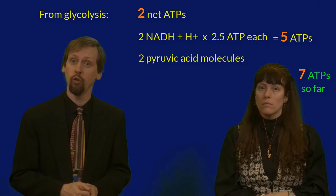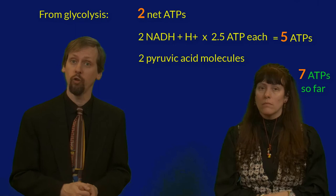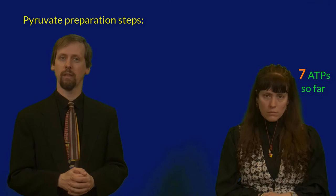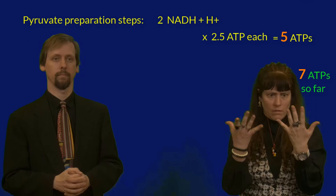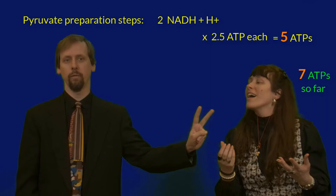Glycolysis made us two pyruvic acid molecules, and each of these underwent the pyruvate preparation steps, including an oxidation, to give us another NADH plus H plus each. That's two and a half times two equals five more ATPs. So, that makes 12 ATPs so far.